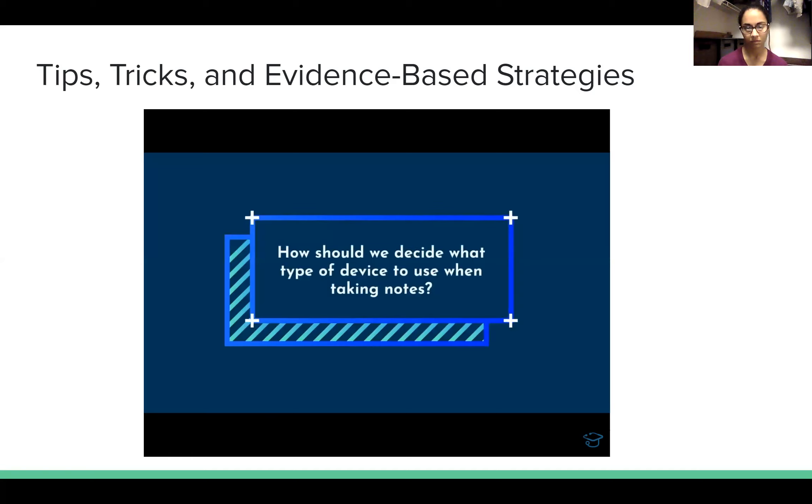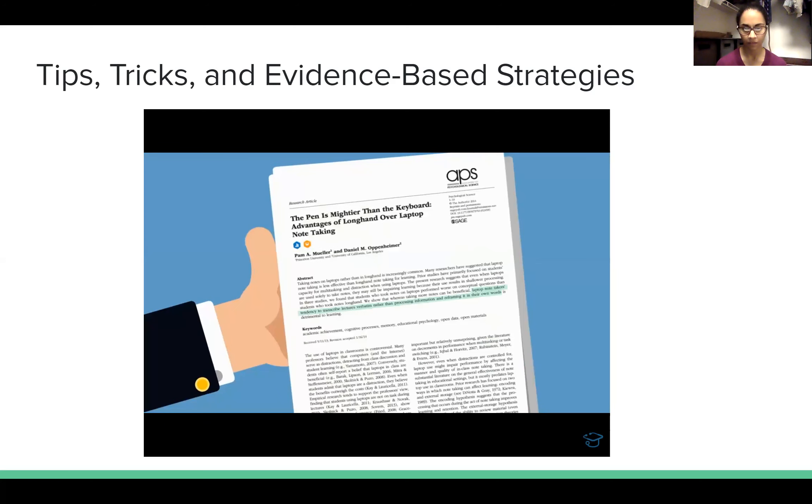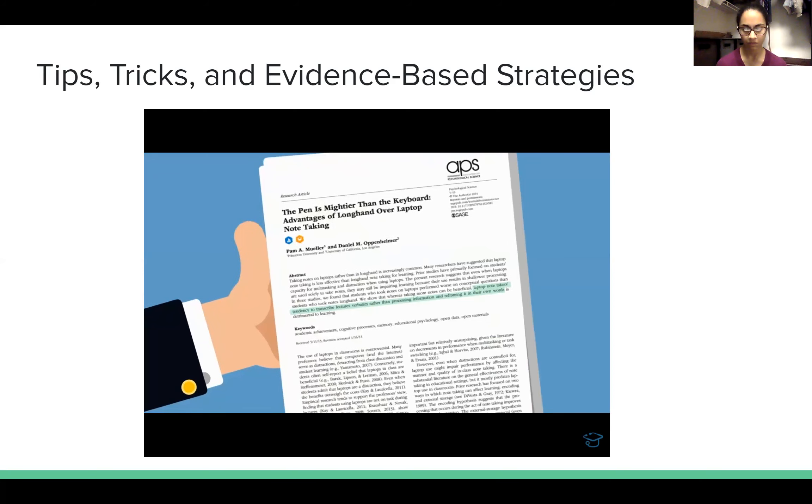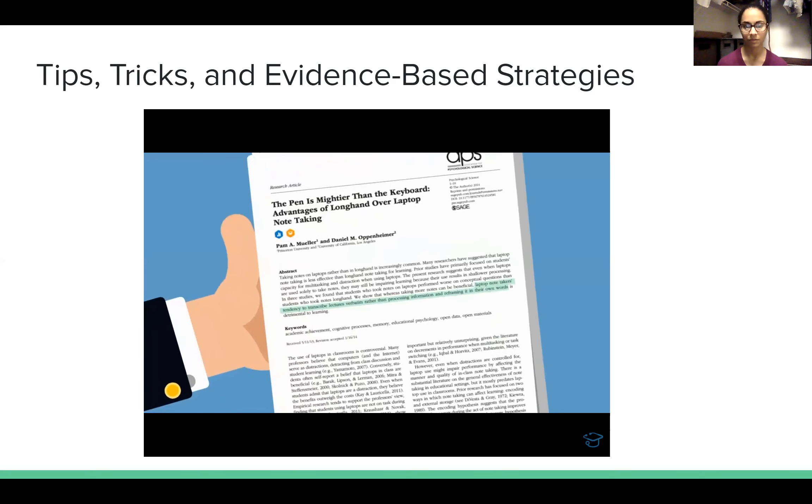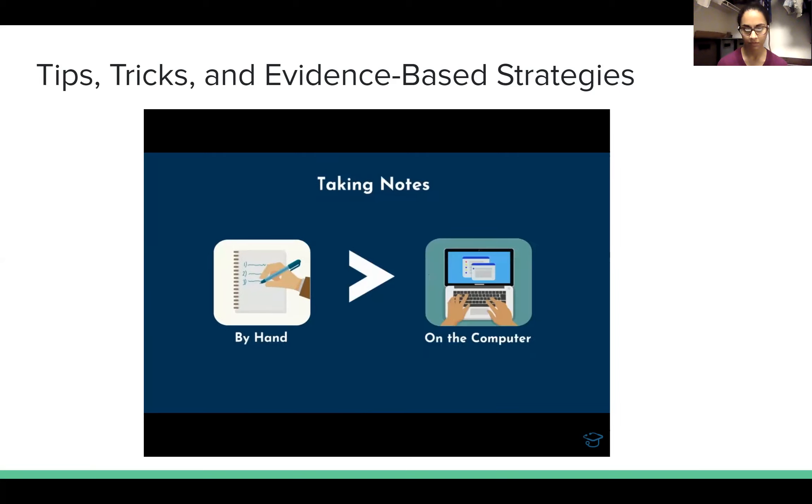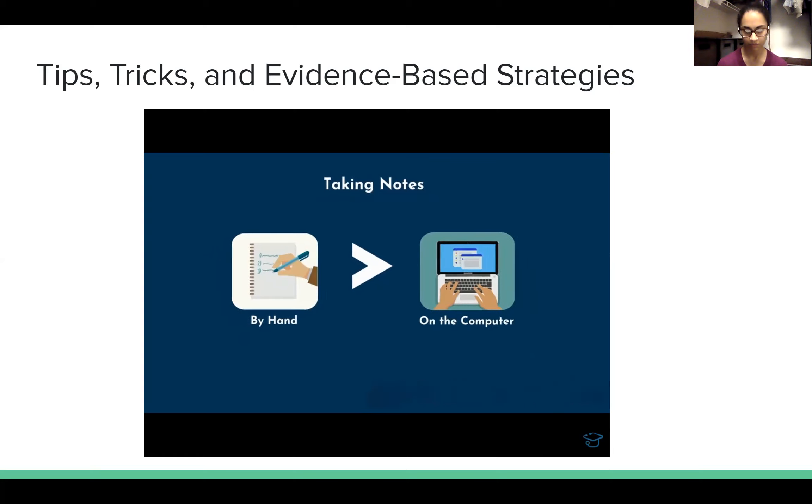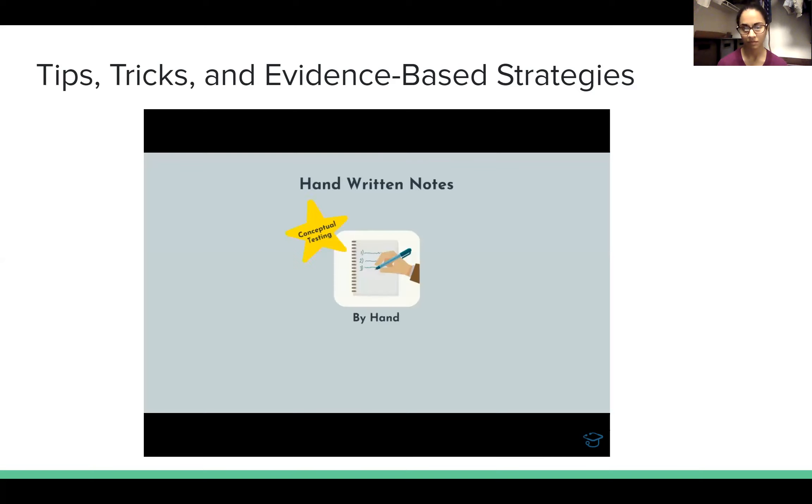The process function refers to the fact that the act of taking notes while listening to lecture improves your comprehension and retention, regardless of whether you review those notes. The product function refers to the ability to review the notes in the future and commit facts to memory through rehearsal, organization, or elaboration. With that in mind, how should we decide what type of device to use when taking notes? Type on a computer and you cannot easily draw or you may be prone to distractions.